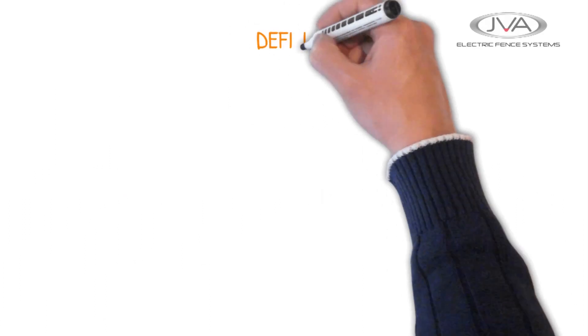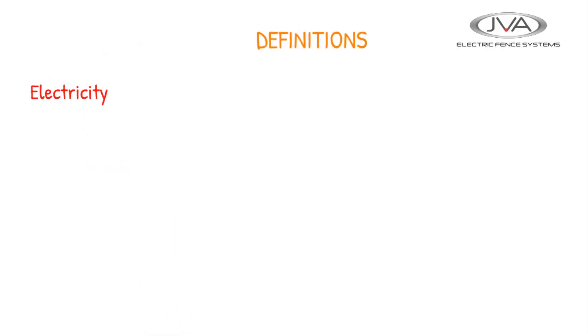Before we start, we need to understand some definitions. Firstly, what is electricity? Electricity is the flow of electrons around a circuit.